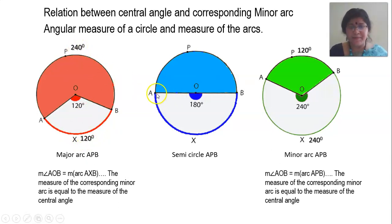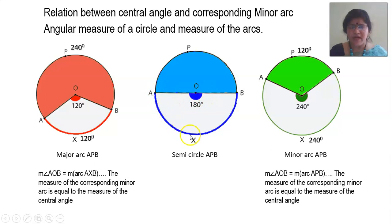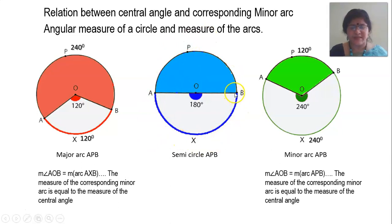Similarly, AB is the chord of the circle which is also the diameter. It segregates the circle into two parts; each such region is called a segment of the circle, so here you have two semicircular regions. The central angle AOB is 180 degrees, so the corresponding arc will also be 180 degrees. The same is the case with arc APB — it will also be 180 degrees because it is 360 minus 180, and both arcs are semicircular.